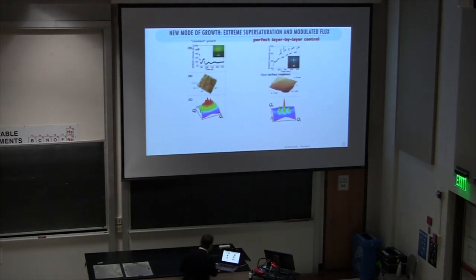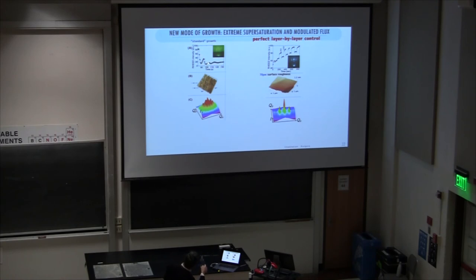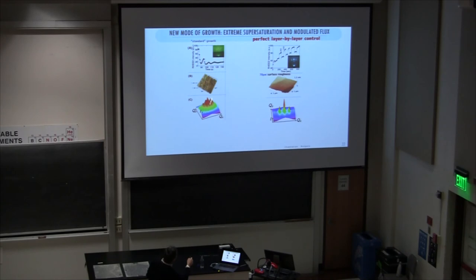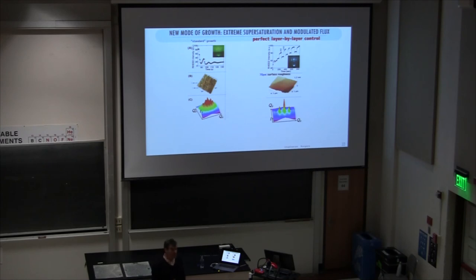Here's a real RHEED pattern. You can see the oscillations dying out — that means you went to three-dimensional growth: you delivered too much and islands are piling up like mountains. The time scale is visible: one unit cell here takes about 10 seconds — growing one unit cell of YBCO which is 10 angstroms in 10 seconds. That gives you the growth rate.